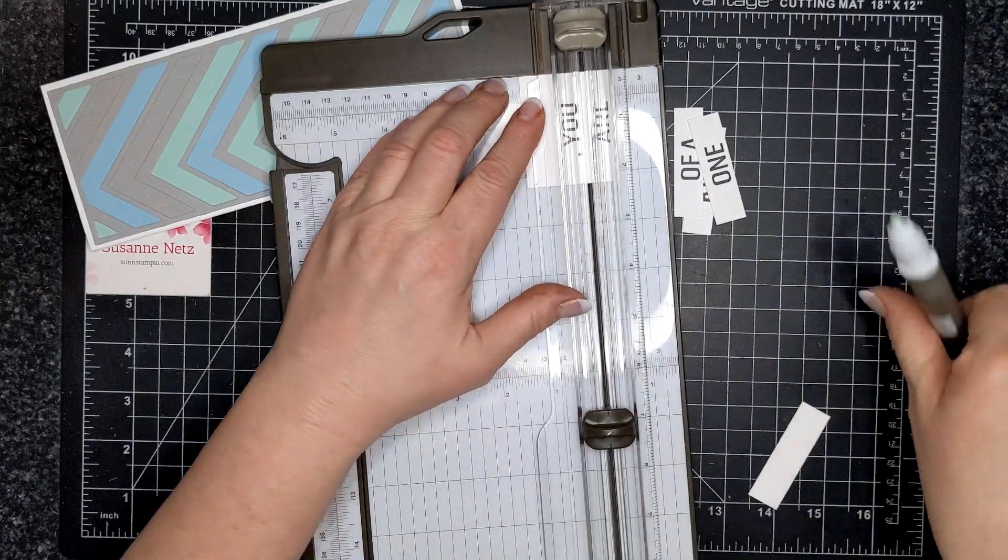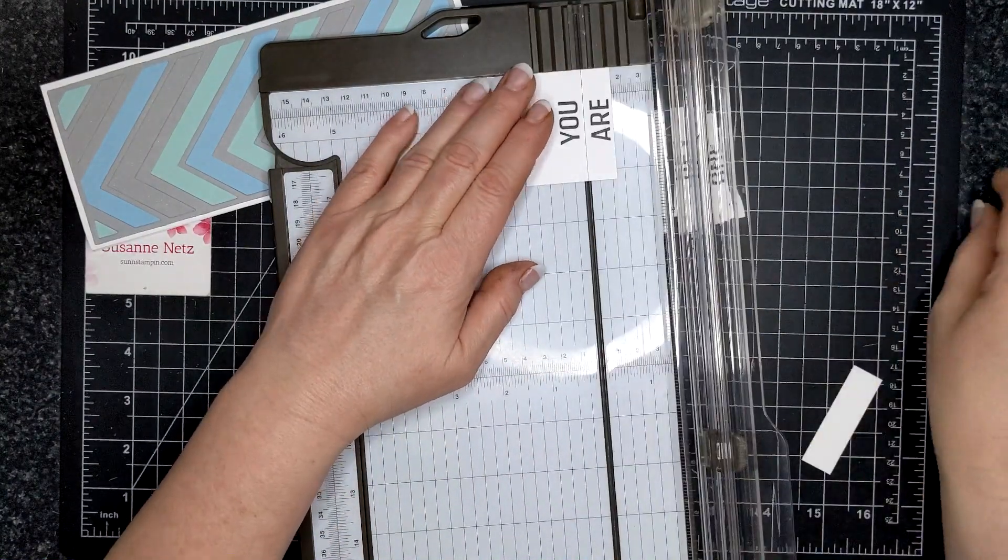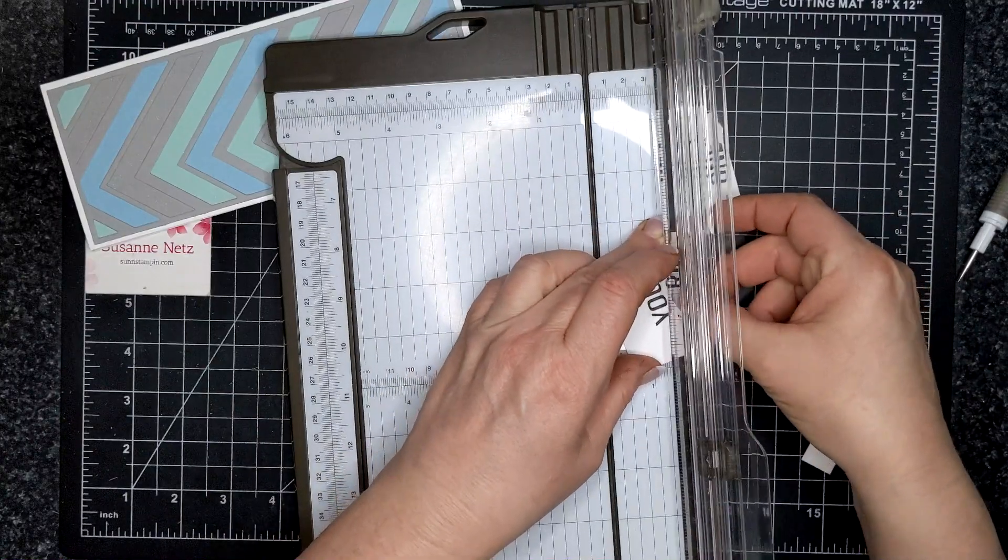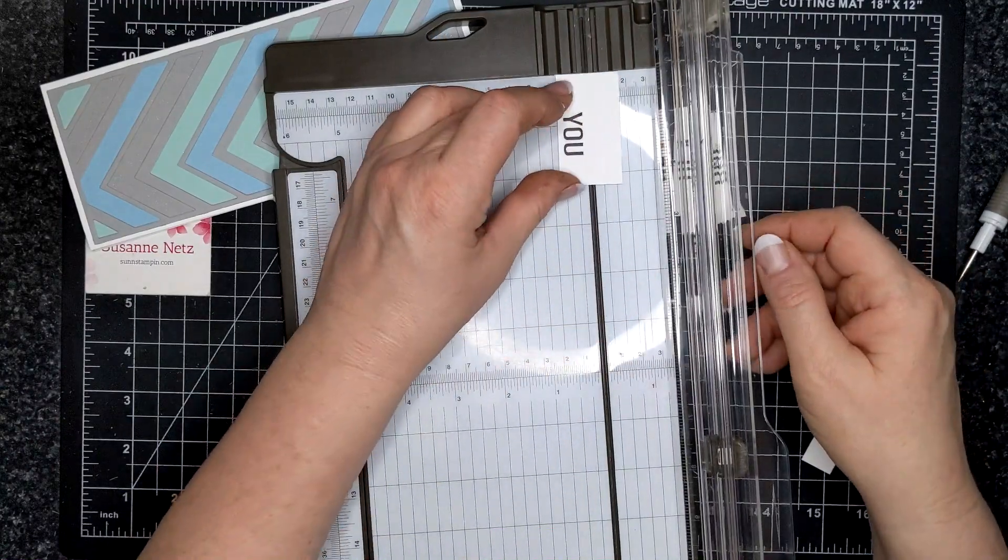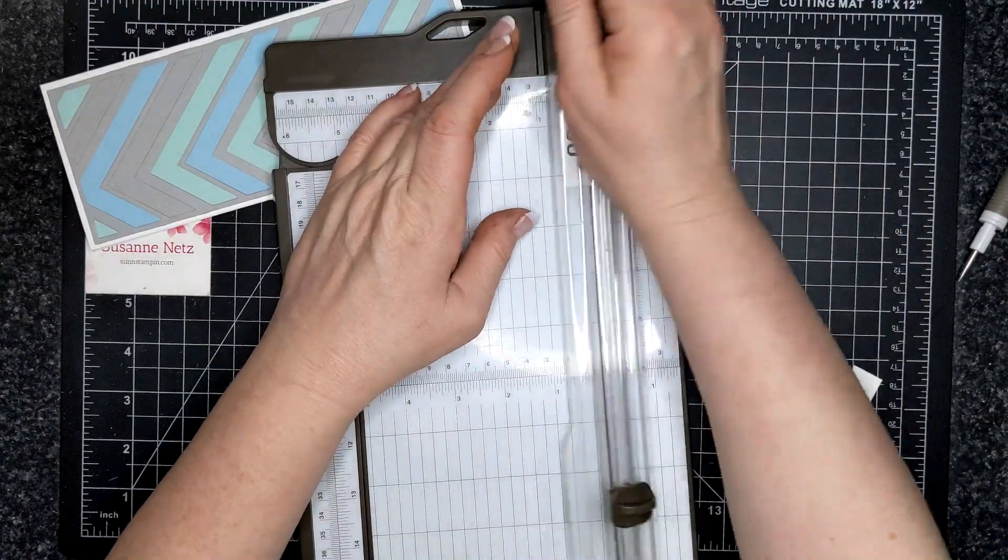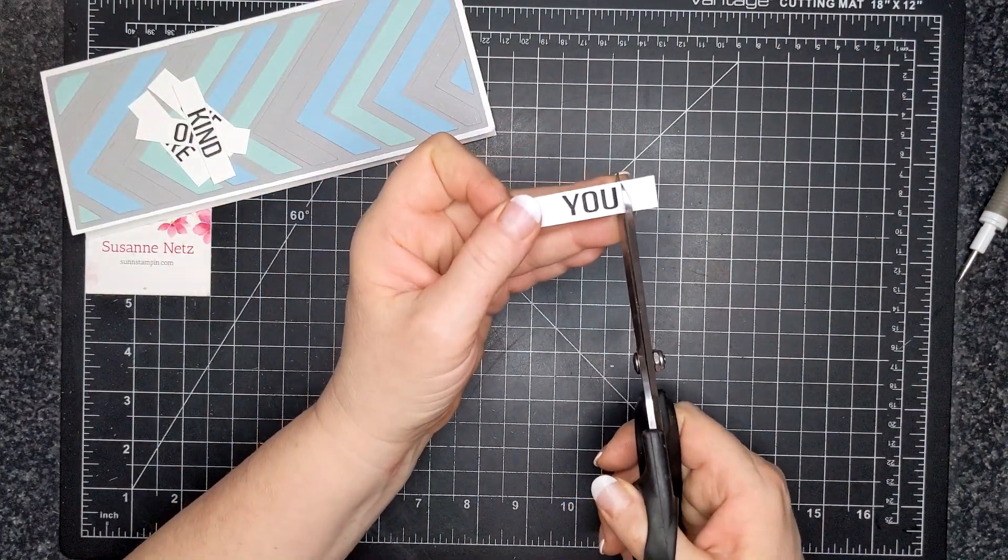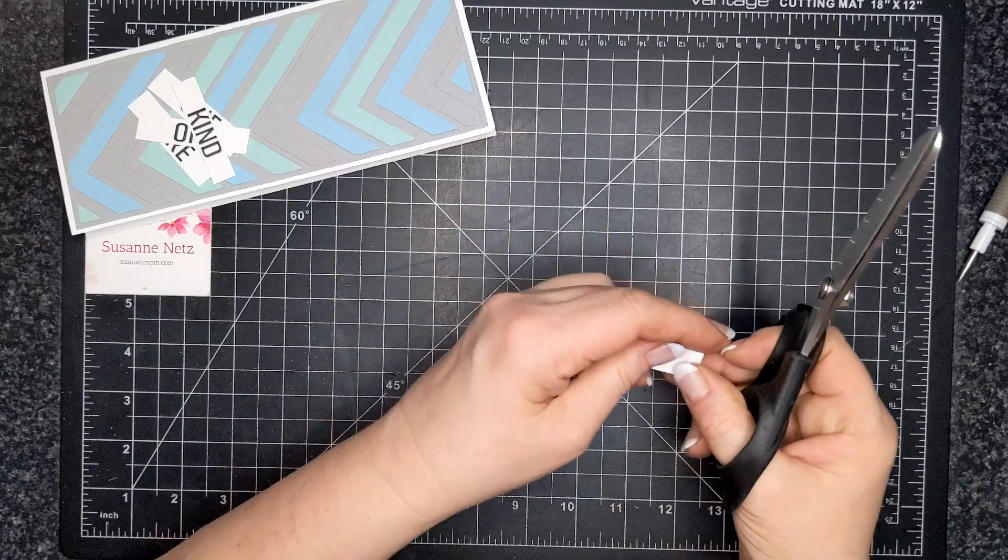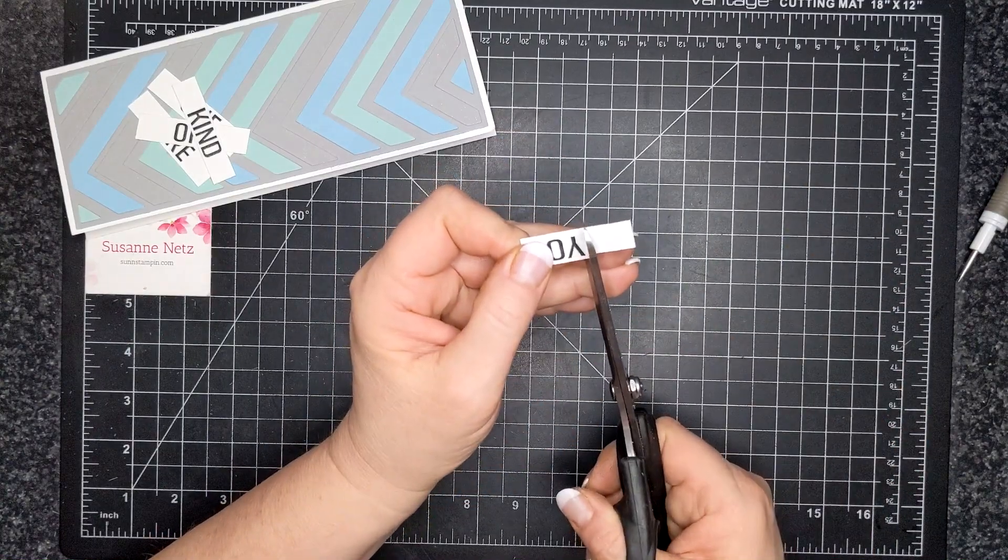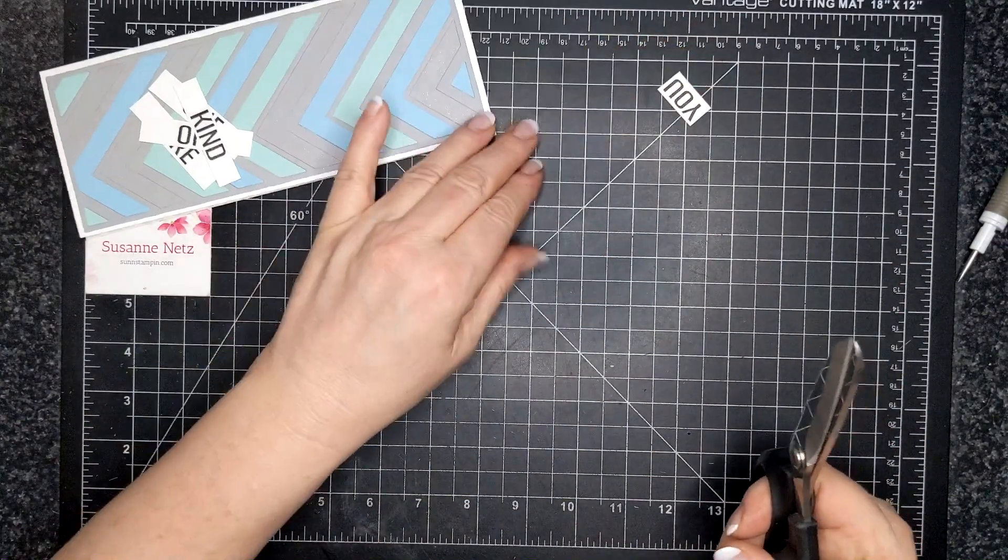So let me see. I just use my little trimmer here and I trimmed off, I cut down all of the little words. You are one of a kind. And now I'm just using my scissors to trim off this. It's easier than trying to fuss with a trimmer.